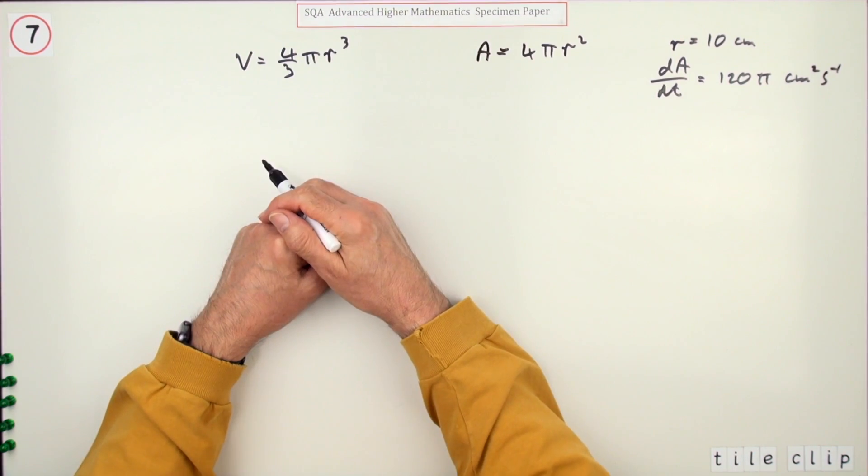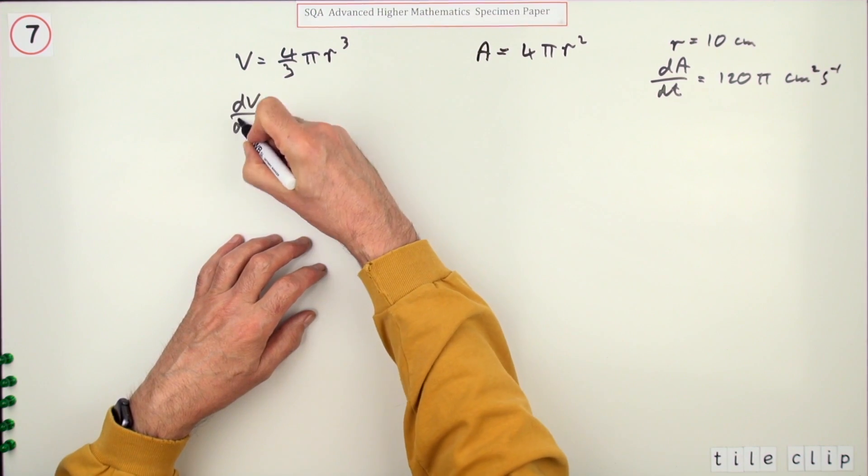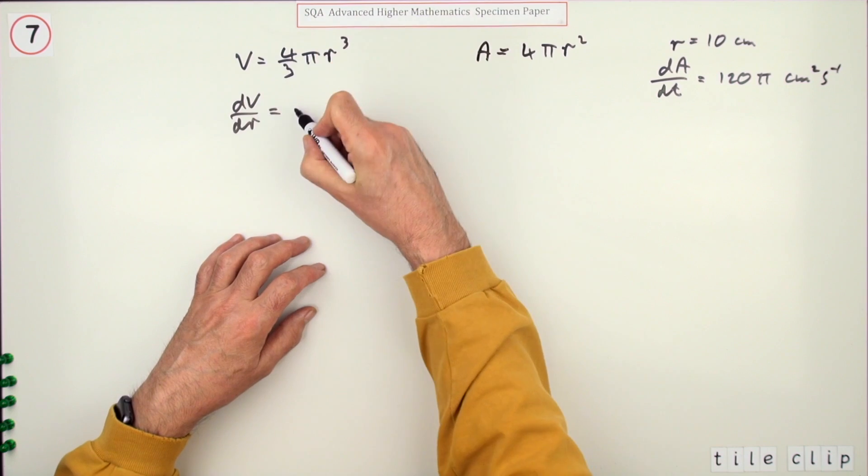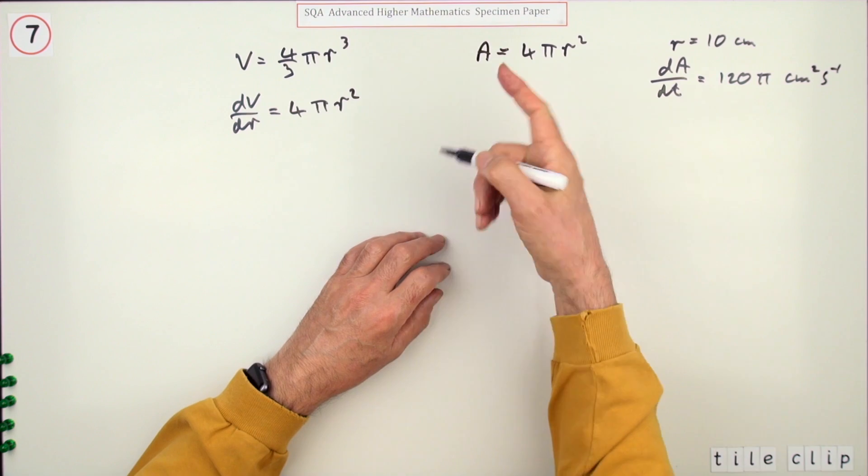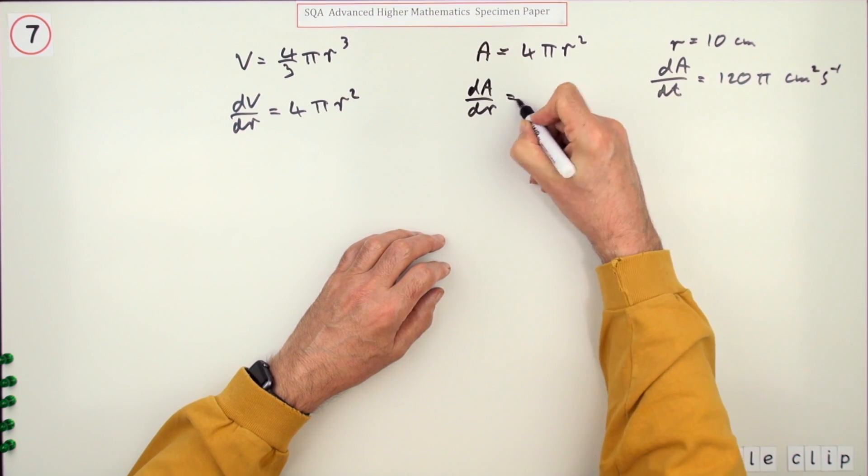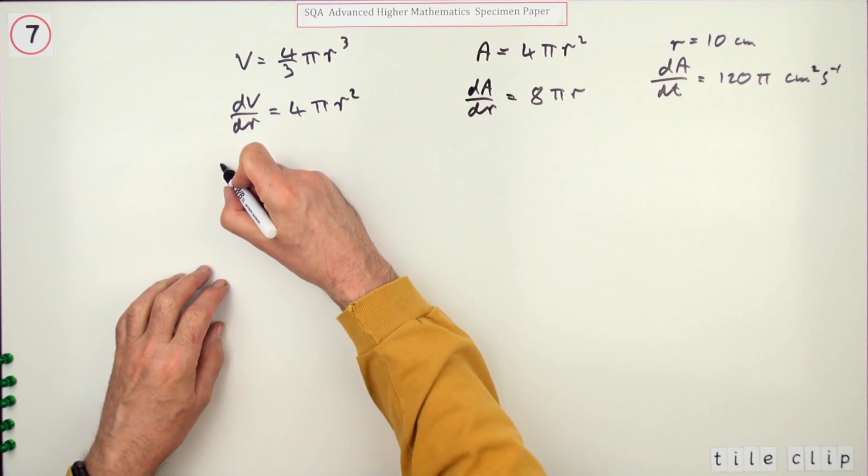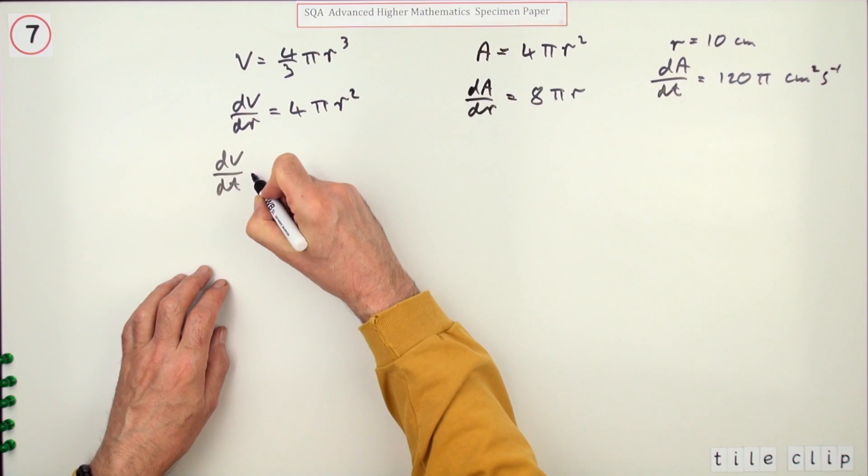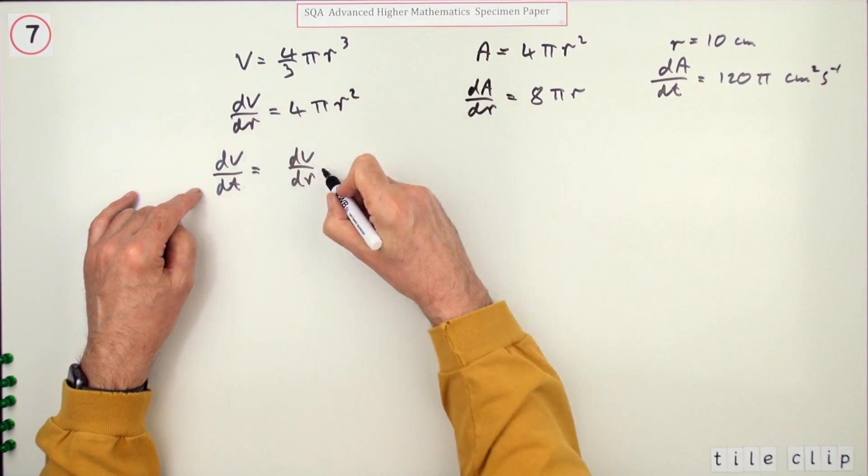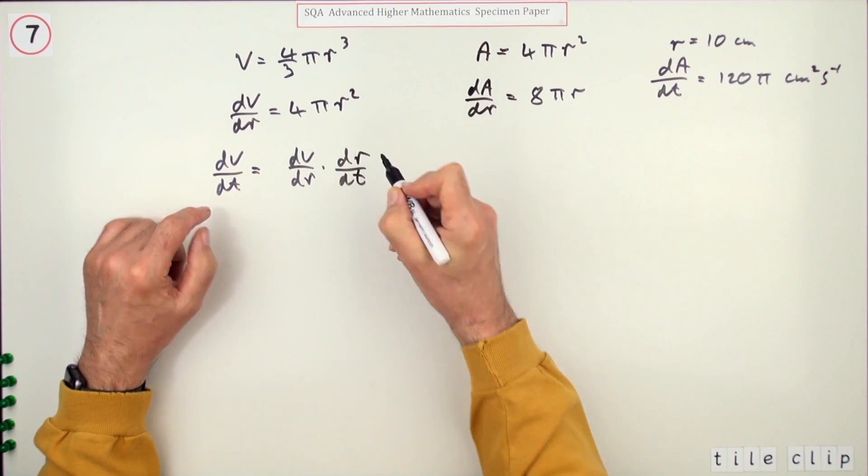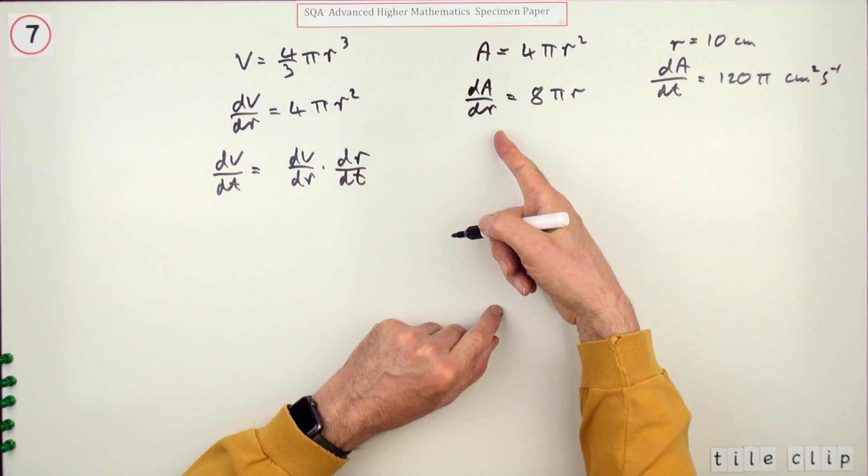You want dV/dt. This expression gives me dV/dr, which is 4πr² - notice that's the surface area. And dA/dr would be 8πr. To get dV/dt, I can write it as dV/dr times dr/dt. I don't know dr/dt yet, but I can find it by rearranging. dr/dt equals dr/dA times dA/dt.